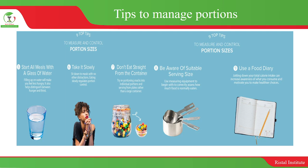Seven, don't eat straight from the container — try portioning snacks into individual portions and serving from plates rather than a large container. Eight, be aware of suitable serving size and use measuring equipment to correctly assess how much food is normally eaten. Finally, nine, use a food diary — jotting down your total calorie intake can increase awareness of what you consume and motivate you to make healthier choices.